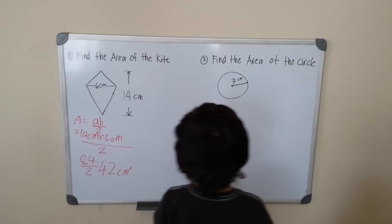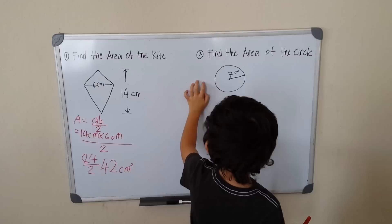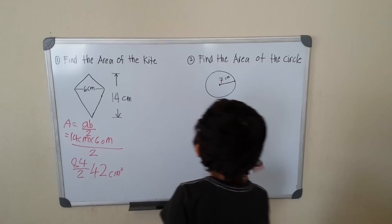That's 84. Now let's go to find the area of a circle. My radius is 7 centimeters.